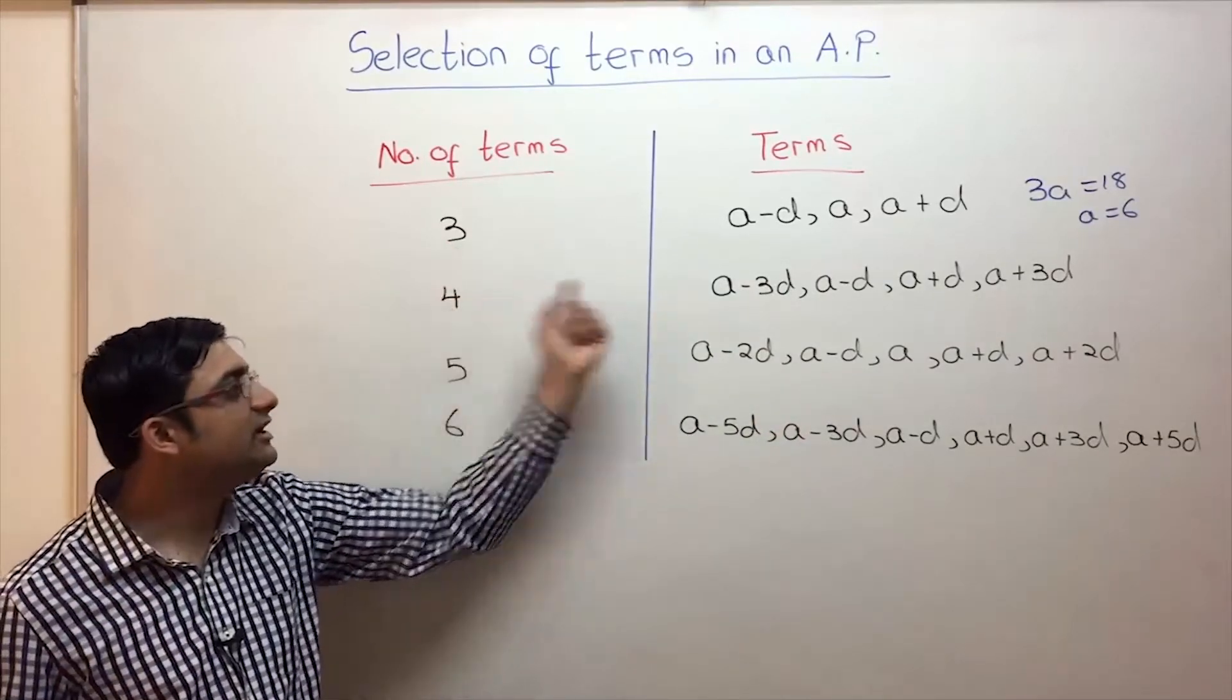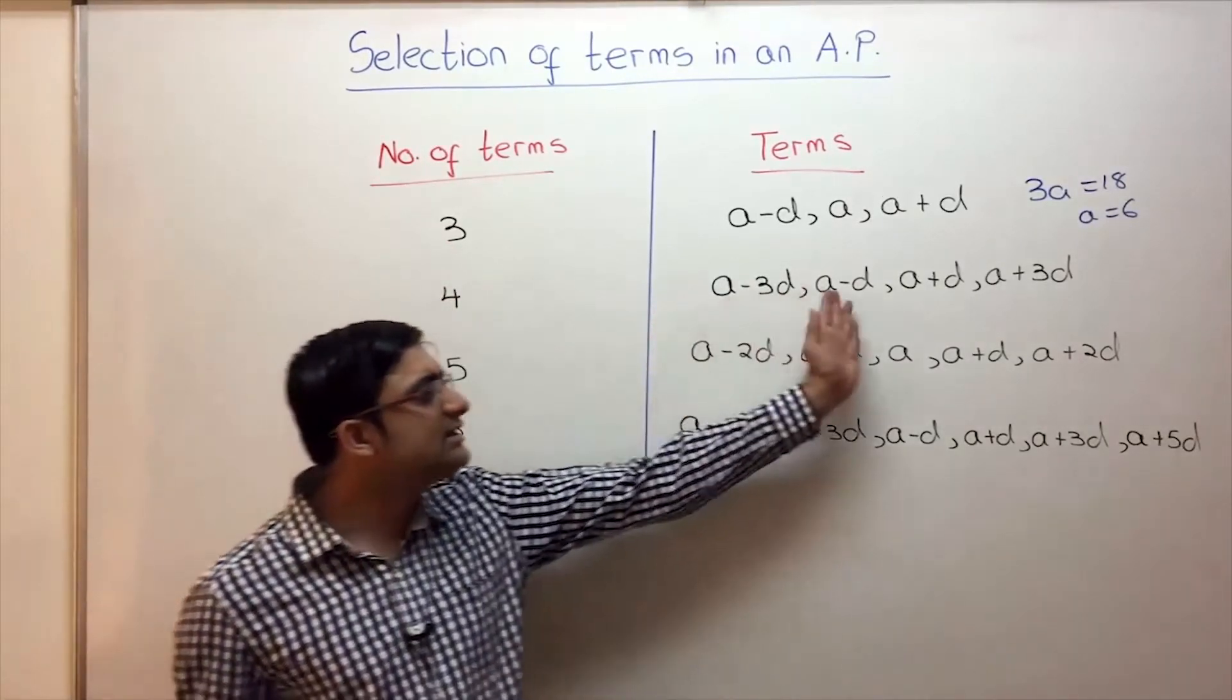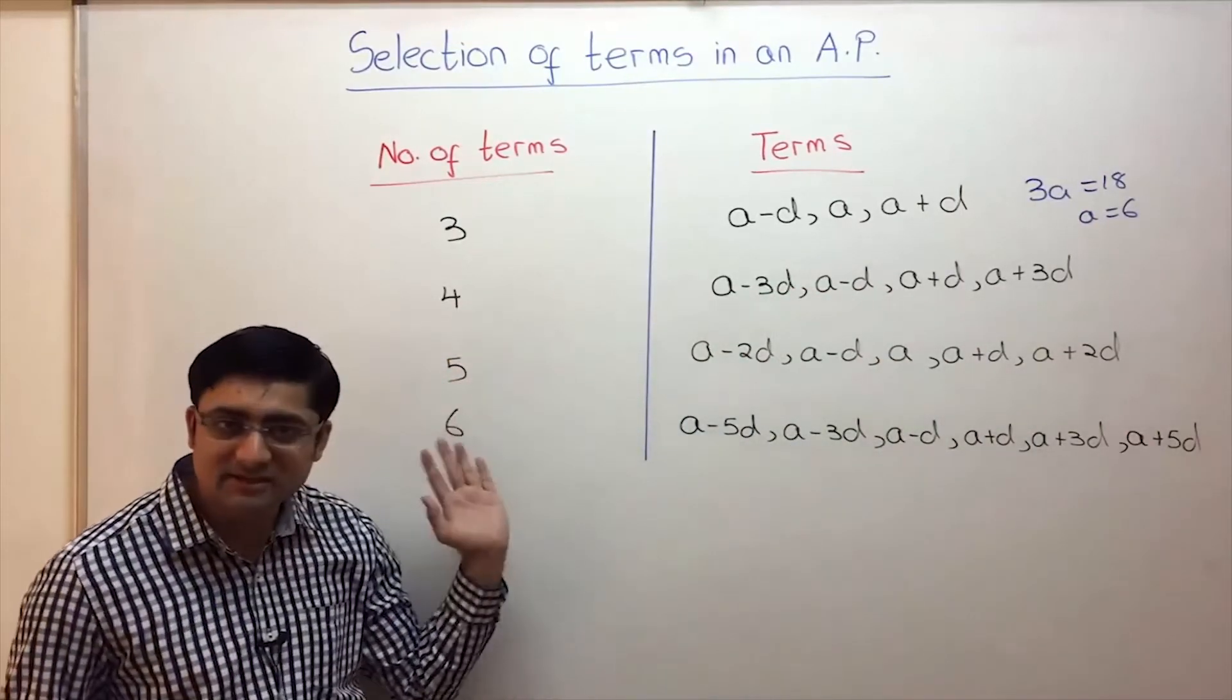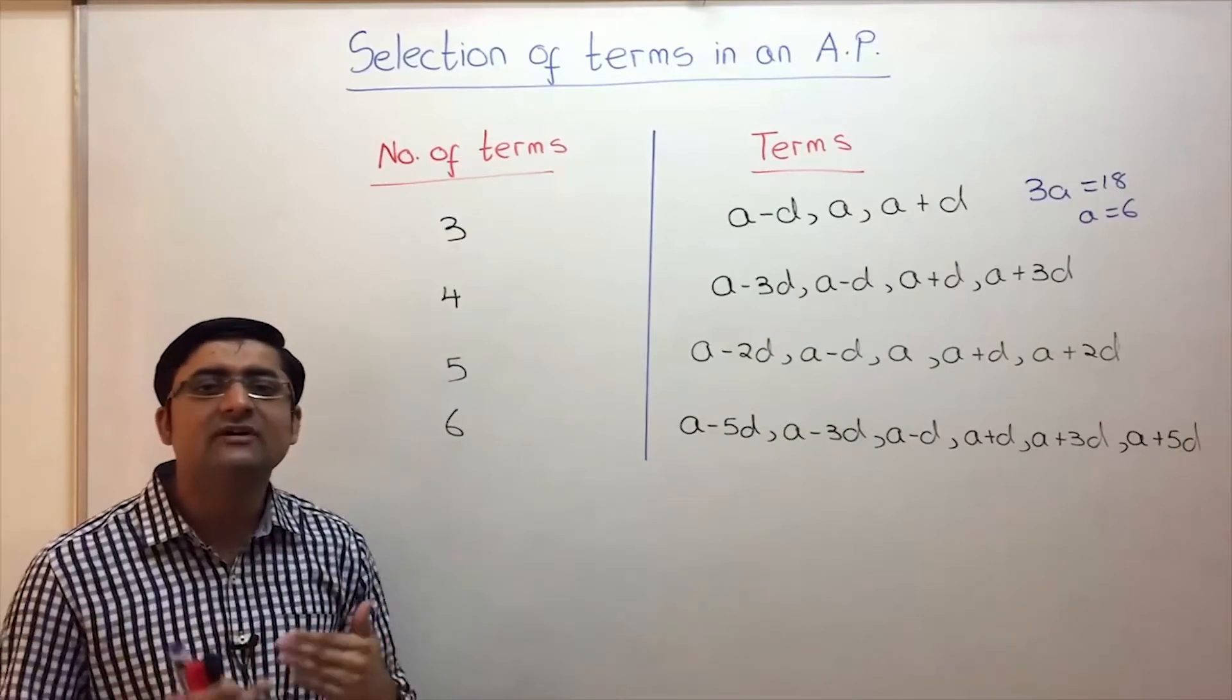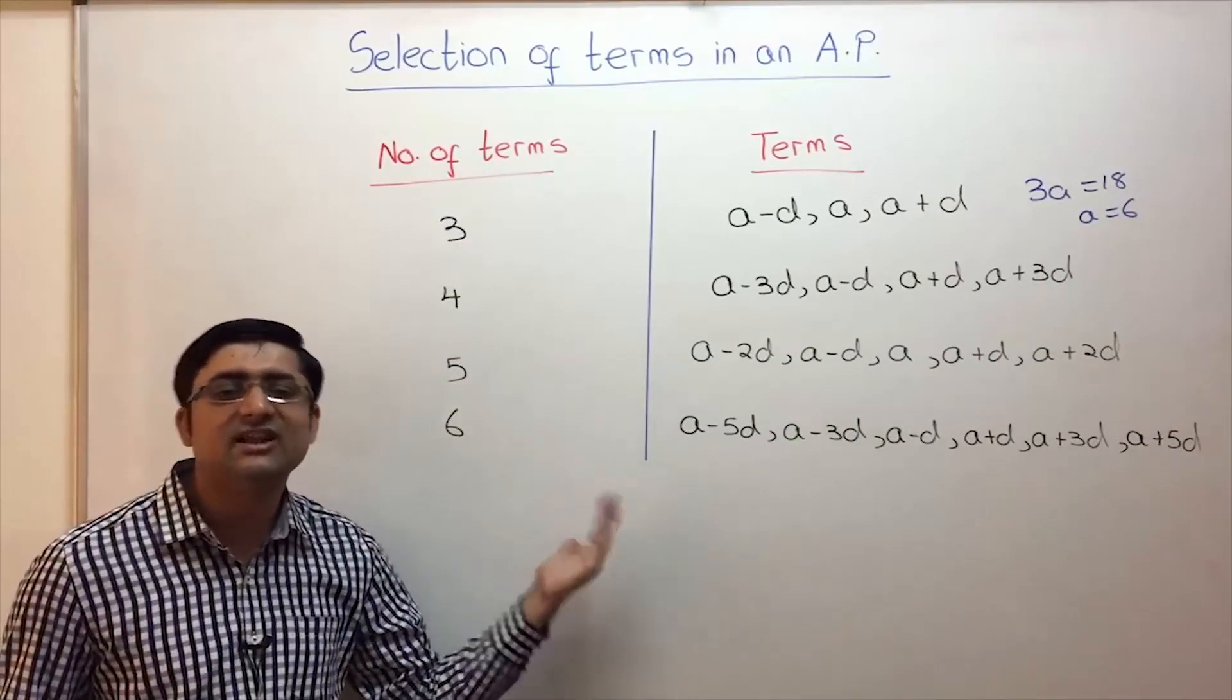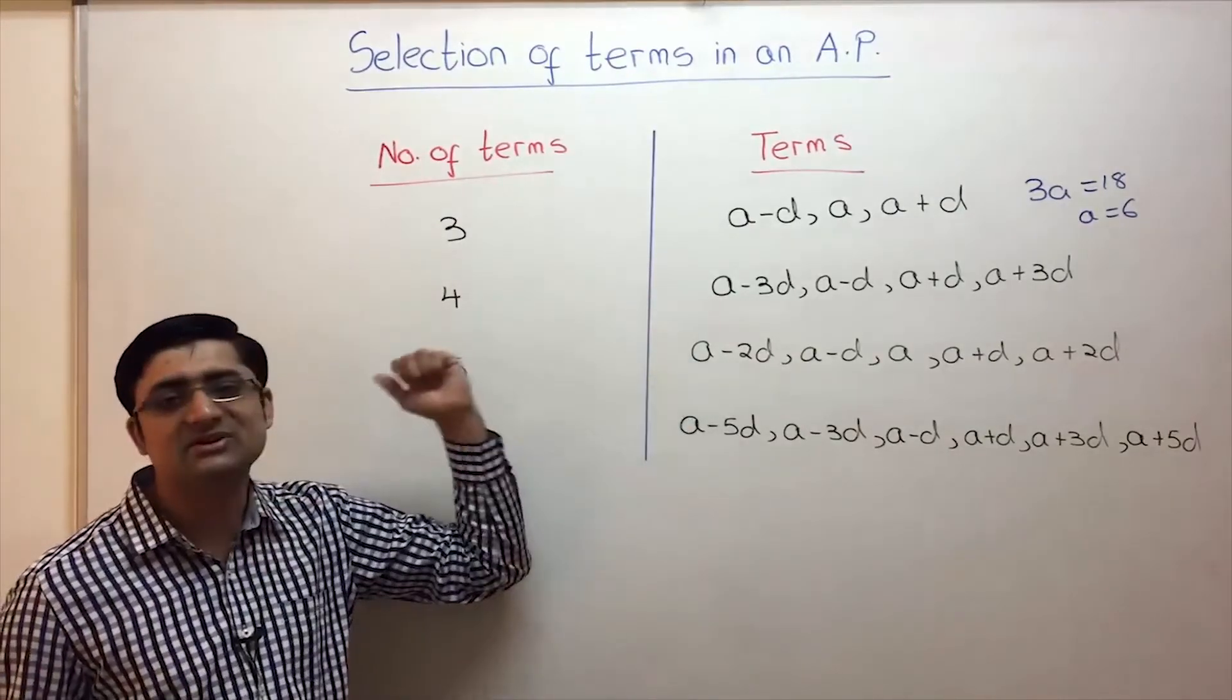So we selected in such a way that sum should simplify nicely. Please remember this table. Now I'm going to rub this off and then we're going to learn how to solve questions based on this concept of selection of terms in an AP using these particular terms.